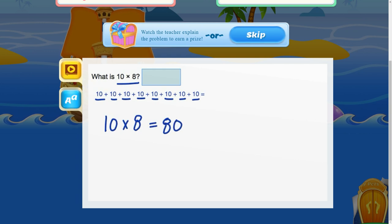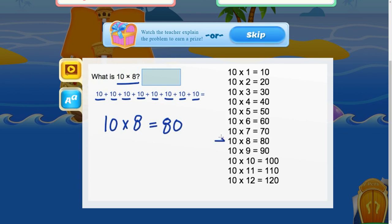So let's look at our multiplication tables and we're correct. 10 times 8 equals 80.